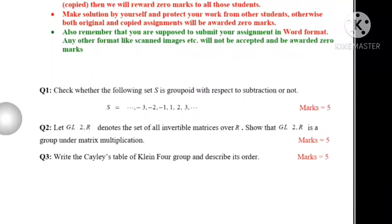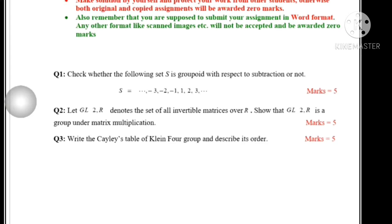Assalamu alaikum students. Aaj hum solve karte hai math 633 ki assignment number 1, question number 2. Let GL₂(ℝ) — the general linear group of degree 2 — denote the set of all invertible matrices over ℝ. Show that the general linear group of degree 2 is a group under matrix multiplication.